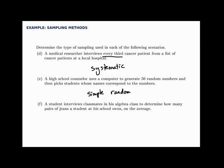Lastly, a student interviews classmates in his algebra class to determine how many pairs of jeans a student at the school owns on average. The student is looking for information about the whole school, but rather than using a full student list or selecting randomly or dividing into groups, the student just asks the nearby students in his class — which makes this a convenience sample.